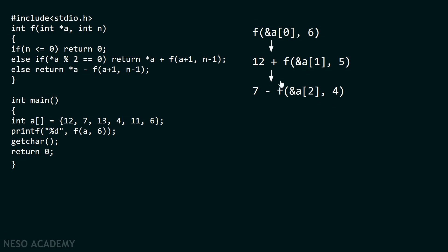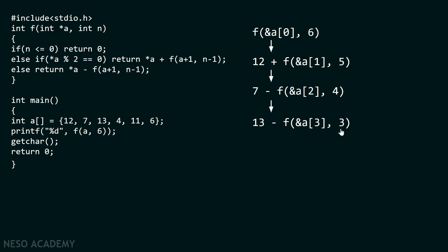If we observe carefully, we are getting a clear pattern. If we have an even number, the sign will be plus; if we have an odd number, the sign will be minus. Every time we are incrementing the array index — previously we had index 0, then 1 — and every time we are also decrementing n. Previously we had 6, then 5, and now 4. So the pattern is clear; there is no need to evaluate the function again and again. The next call will return: 13 minus F of (&A[3], 3), because 13 is odd. The index becomes 3 and n becomes 3.